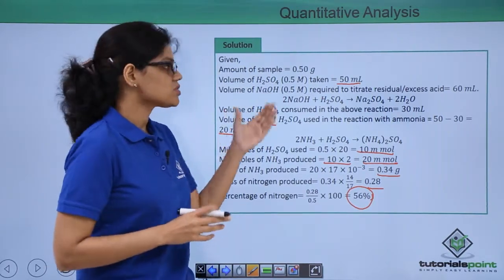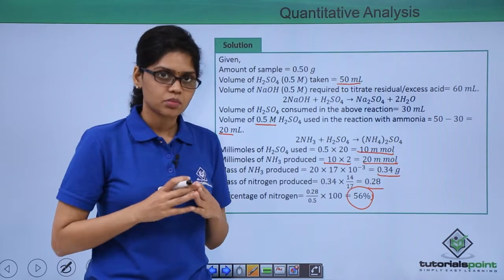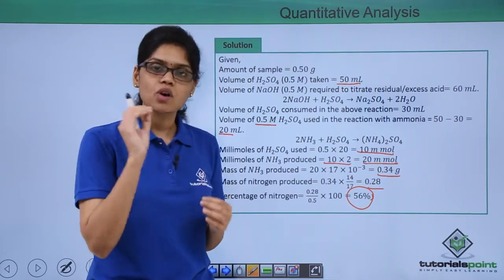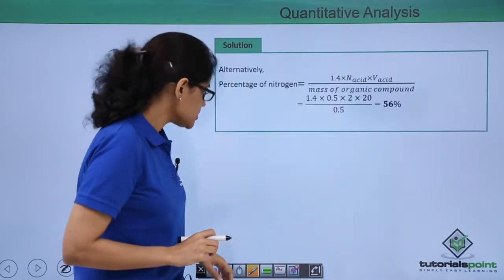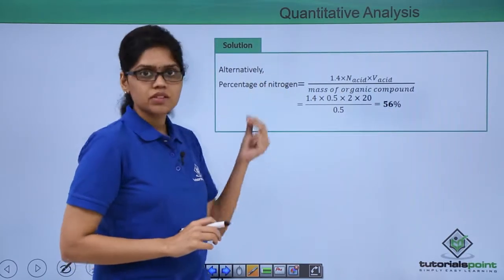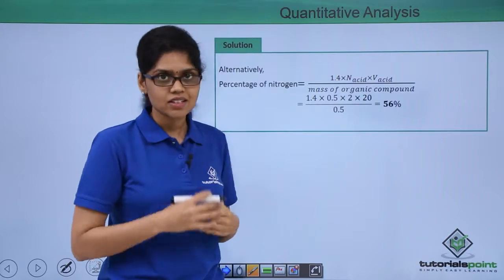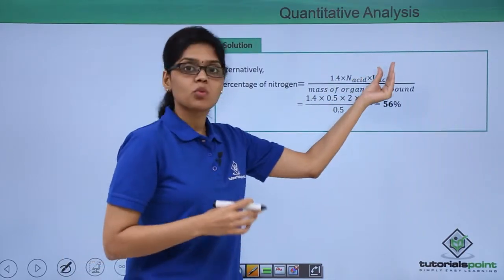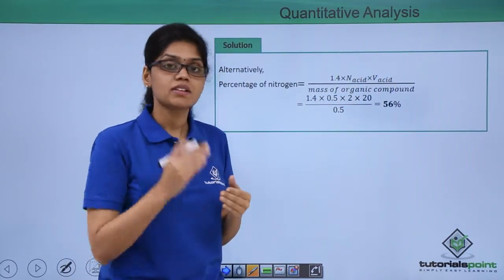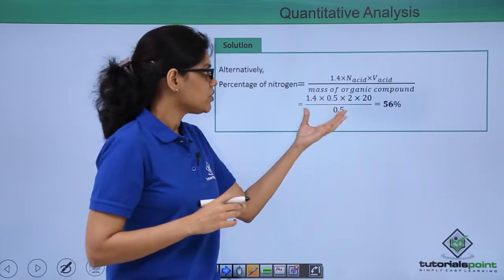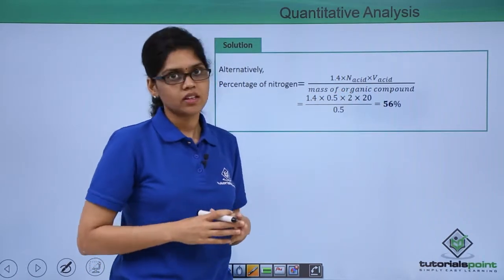Alternatively, there is also another method of solving this particular problem by simply using the formula that we have discussed previously, which is percentage of nitrogen is equal to 1.4 times normality of acid that is used multiplied by the volume of acid that is consumed in the reaction with ammonia divided by the total mass of the organic compound.